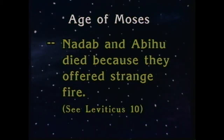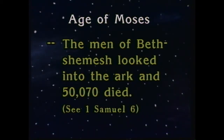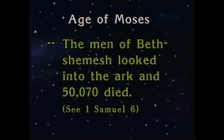We also read in the period of law that the men of Beth Shemesh looked into the ark. 1 Samuel chapter 6 and verse 19, according to the King James Version, says that 50,000 threescore and ten men of Beth Shemesh died because they looked into the ark of the covenant.